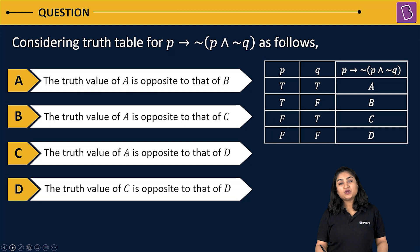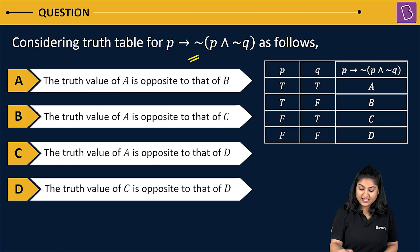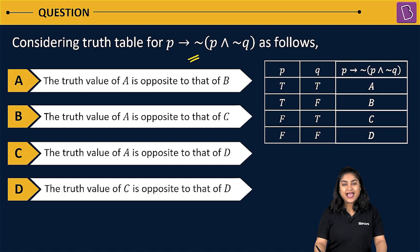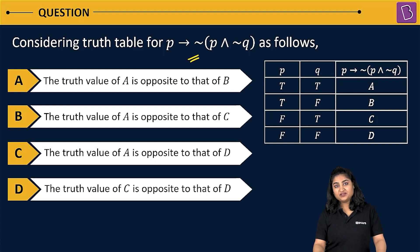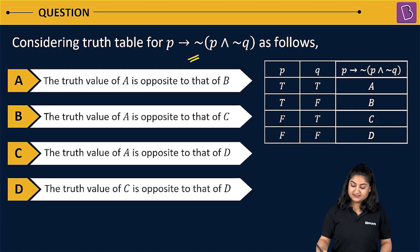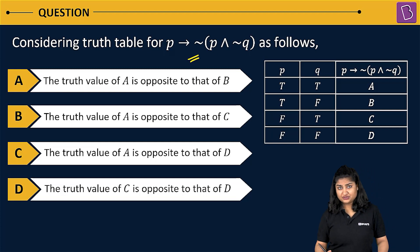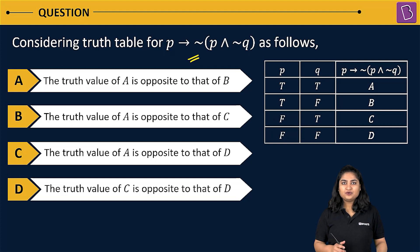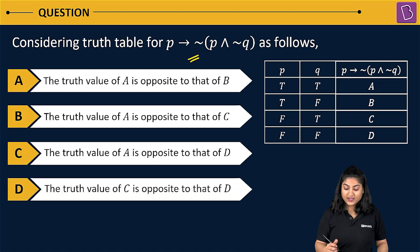In this question, we have been given a Boolean expression which is P implies negation of P and negation Q. A truth table has been given for this Boolean expression where A, B, C, D are the respective truth values — when P and Q are true-true, true-false, false-true, and false-false respectively.